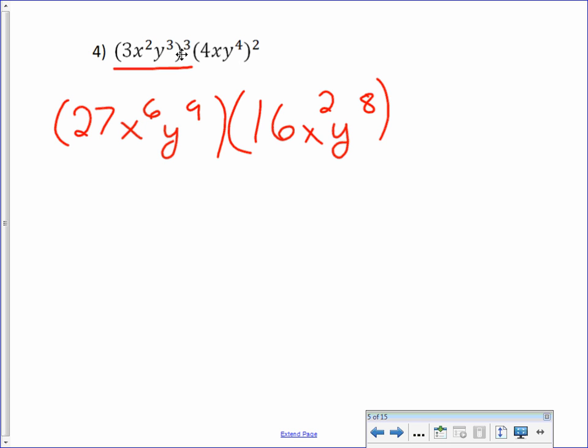The same thing in the second one. Then we multiply these two things together. And so now we're multiplying, so 27 times 16 is 432. And then x squared times x to the 6th, now we're multiplying two numbers with the same base, so we add the exponents. And that's your final answer.